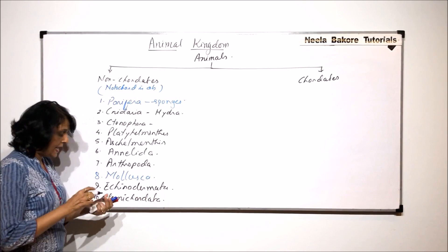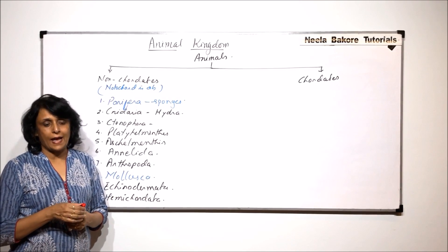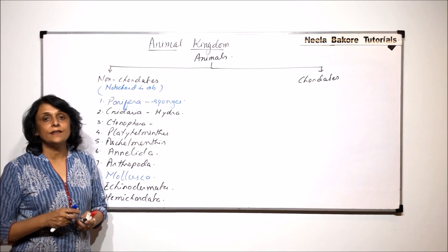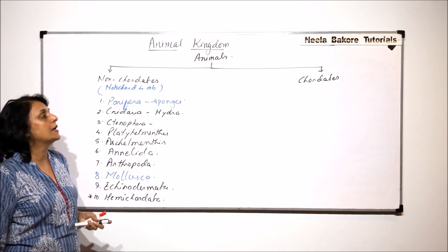And the tenth one which we write here is actually Hemichordata. Hemichordata is considered as a link. It shows very few chordate characters and most of the characters are non-chordate characters. So when we come to this, we will take examples and we will try to understand.